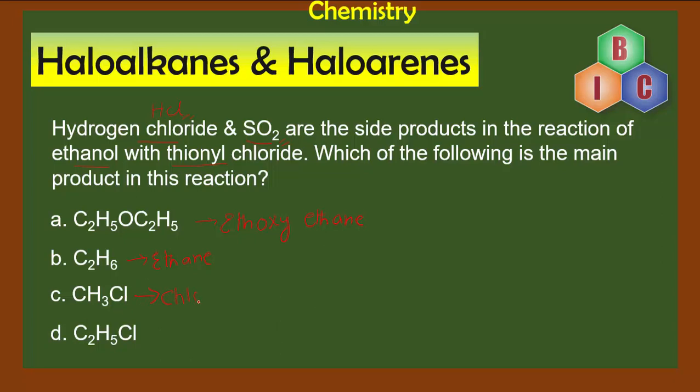The third option is CH3Cl, which is chloromethane or methyl chloride. Or is it going to be C2H5Cl, which is chloroethane?